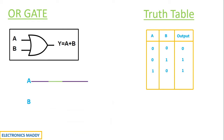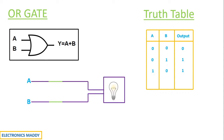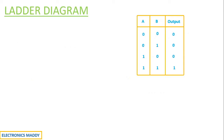Now if both the inputs A and B are actually short circuited, then obviously current will flow through both the paths and the light actually glows. So when A and B is equal to 1, the output will be equal to 1. So this is how we need to understand how does an OR gate operate.